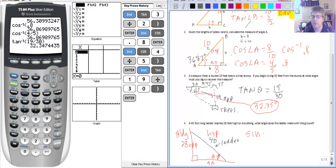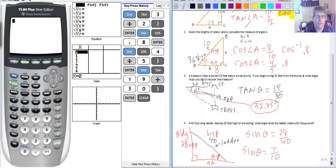So the sine of some angle theta equals 28 over 40. So the sine of theta is equal to 7 over 10.